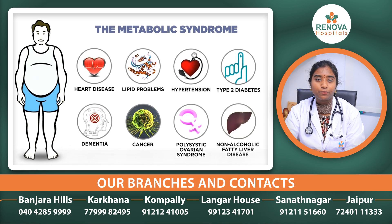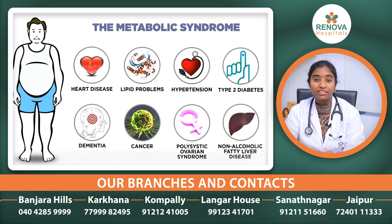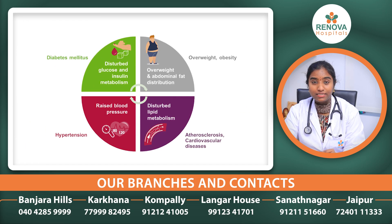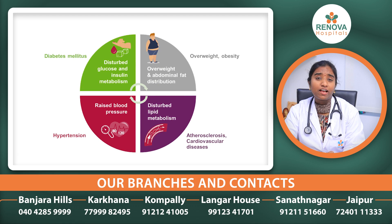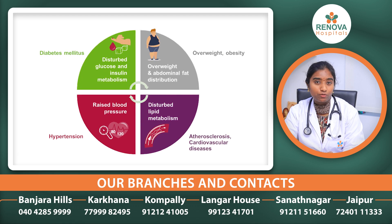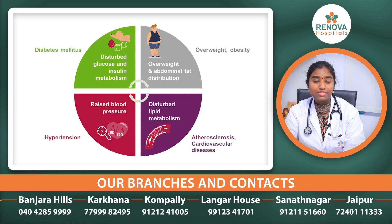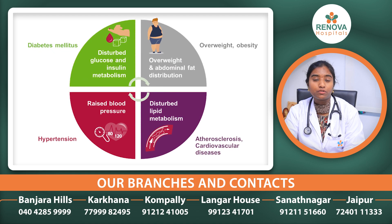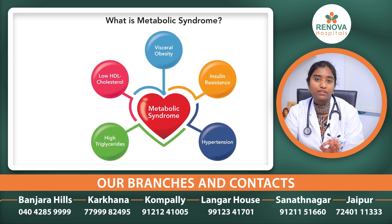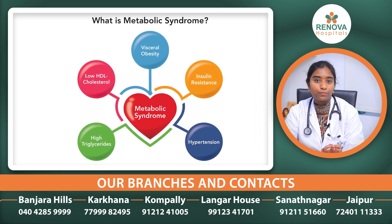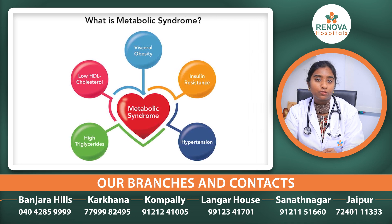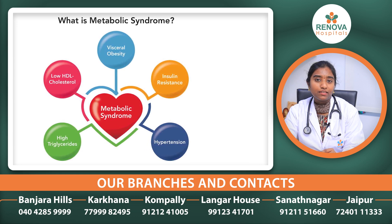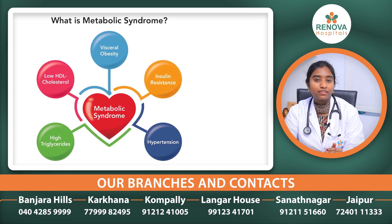The patient is overweight, with increased waist circumference. The second criteria is fasting blood sugar. Third is dyslipidemia — there are triglycerides at 150 levels. There is low good cholesterol. And blood pressure is more than 130 by 90.